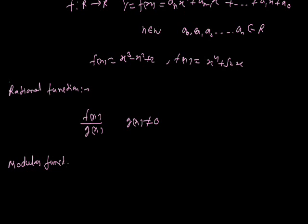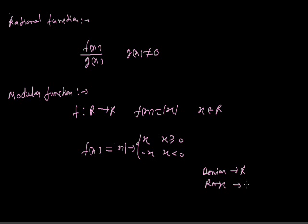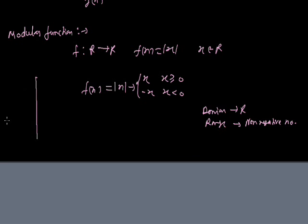Now we are talking about the modulus function, defined as f: R to R by f(x) equals |x|, where x belongs to real numbers. We define it as: f(x) equals x if x is greater than or equal to 0, and f(x) equals minus x if x is less than 0. The domain belongs to R and the range belongs to non-negative numbers. The graph of the modulus function forms a V-shape on the x-y axis.